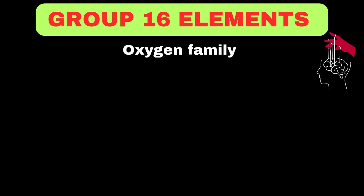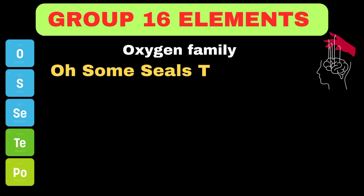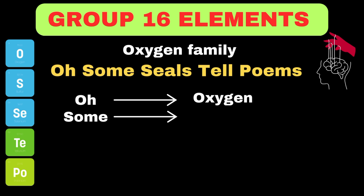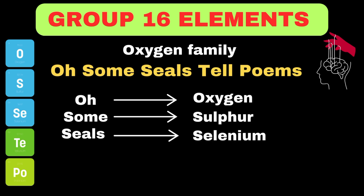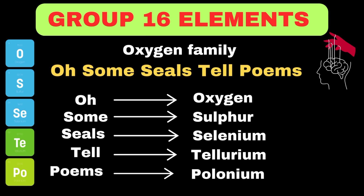Now let's move towards group 16 elements, which is also called the oxygen family. The simple trick to memorize group 16 elements is: 'Oh, some seals tell poems.' Here 'oh' represents oxygen, 'some' represents sulfur, 'seals' shows selenium, 'tell' mentions tellurium, and 'poems' shows polonium.